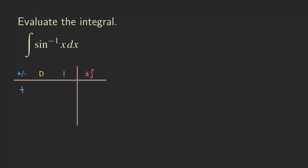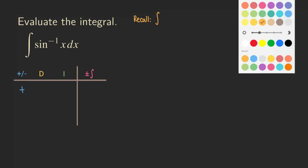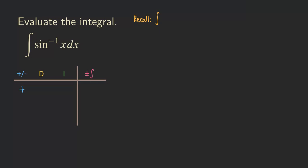Just for you to recall the formula, I should write it down here. The integration by parts formula is: when we integrate, the U is actually the one that we choose to put as the first entry of the D column — that's our U.